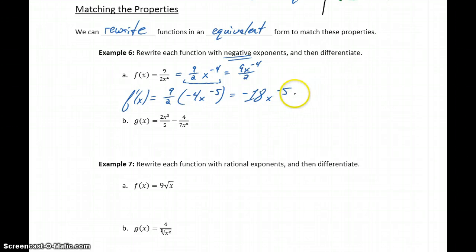We could leave our answer like that, or we could go ahead and move that x to the negative 5th down to the denominator to rewrite it with a positive exponent, to write it as negative 18 over x to the 5th.